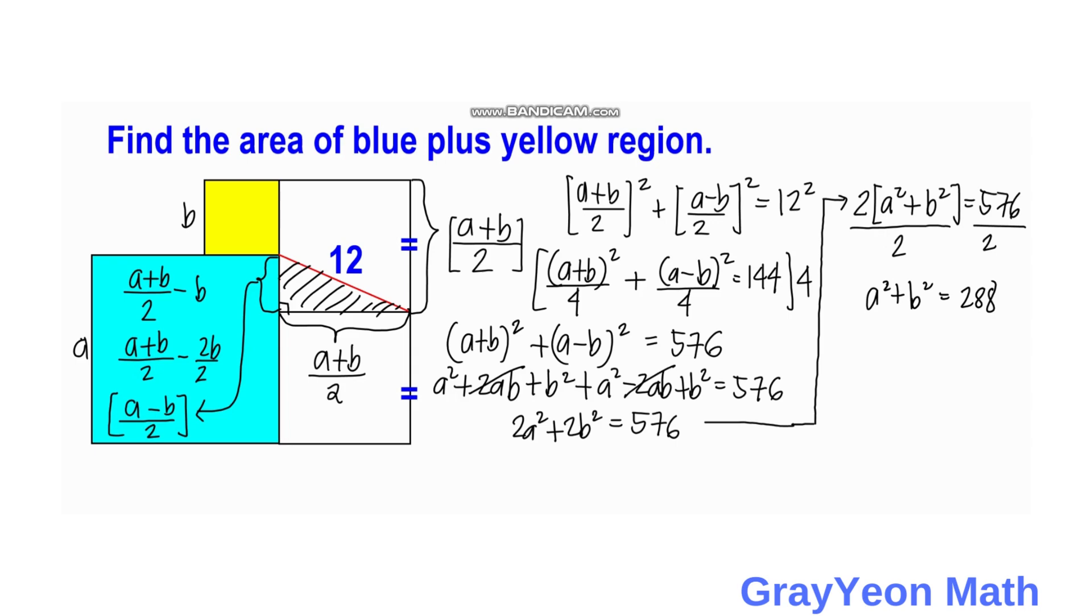And actually A squared plus B squared is the total area of the two squares. So our answer for the area is equal to 288 square units. And this is our answer.